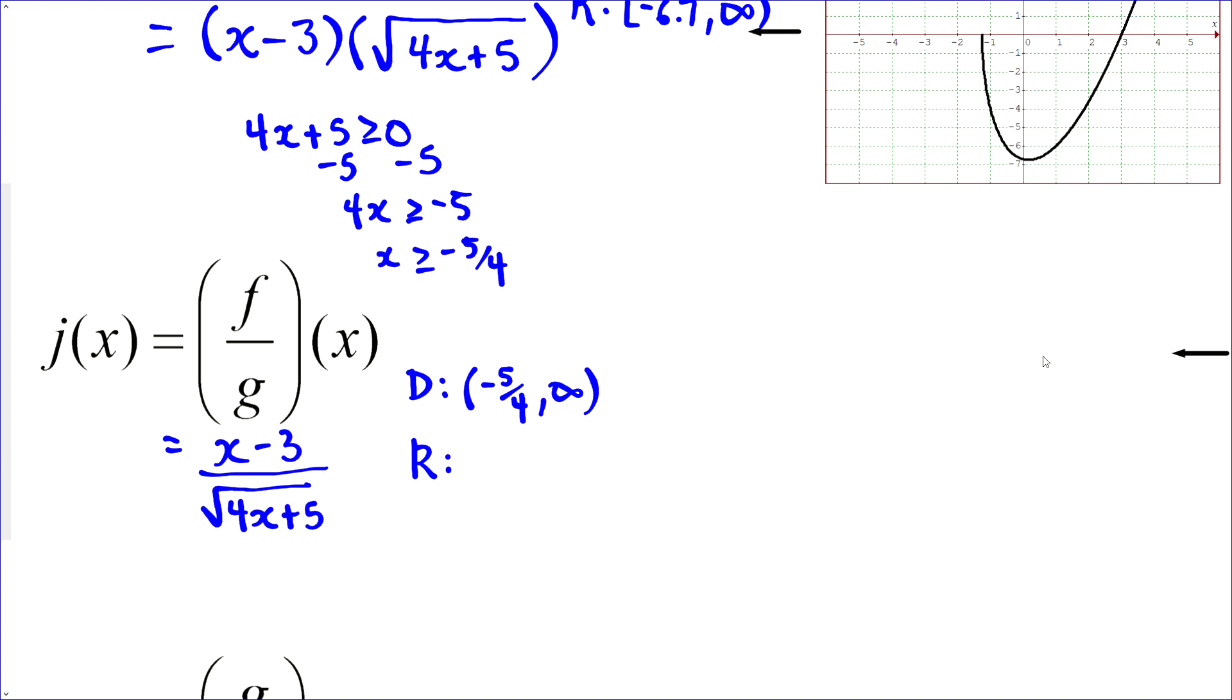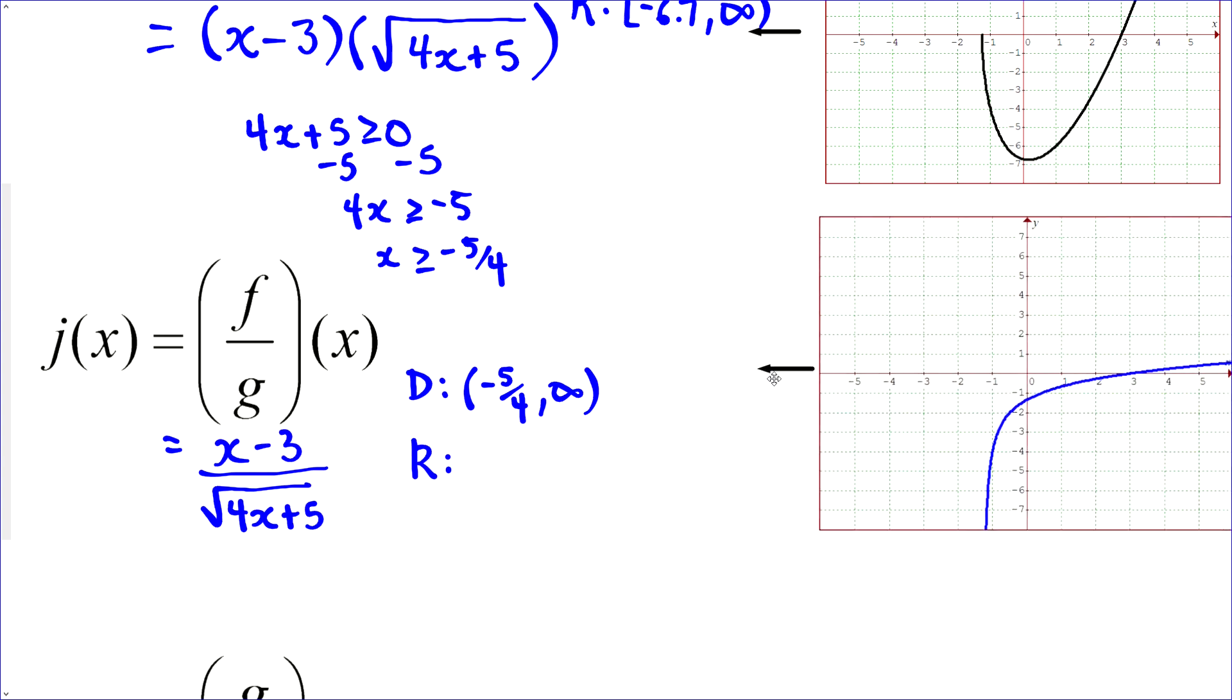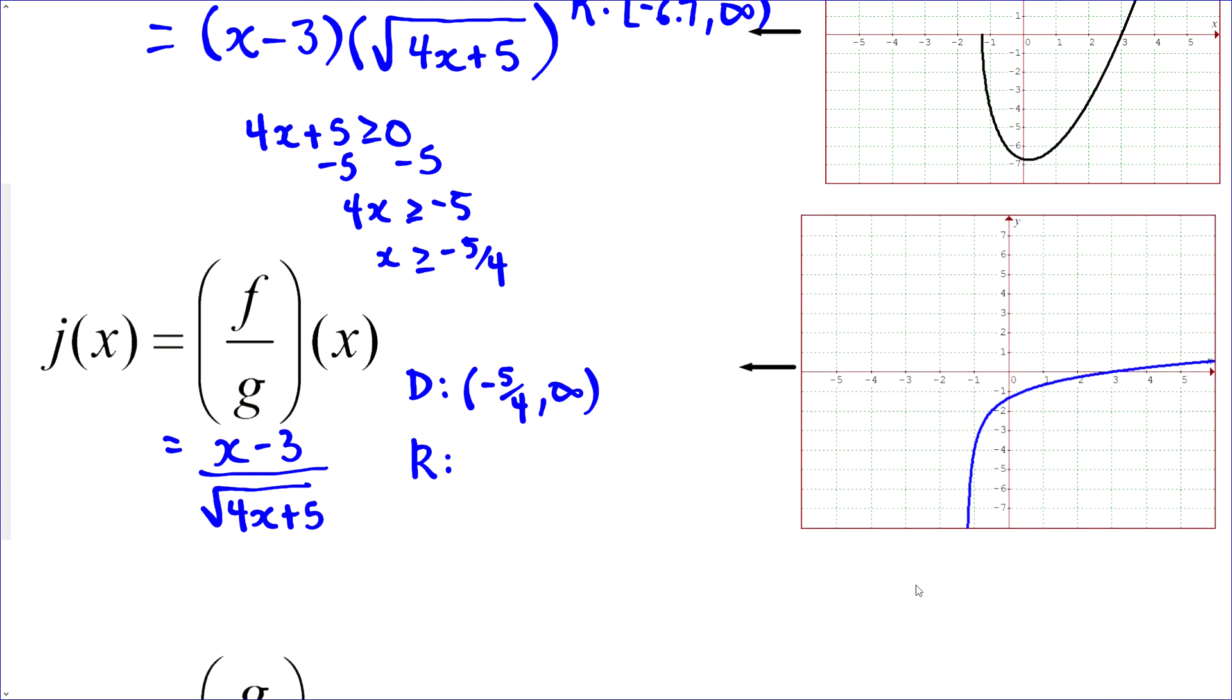And same with the range. We want to do the same thing as we did before. Just look at the graph and see what the graph is doing. In this case, it looks like the graph goes all the way down to negative infinity and slowly goes up to infinity. And so the range is all real numbers. In interval notation, it would look like that.